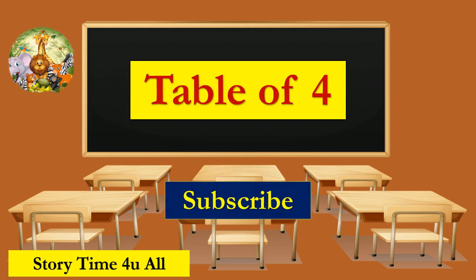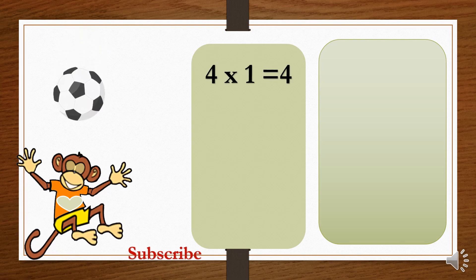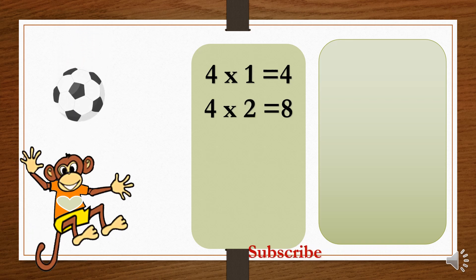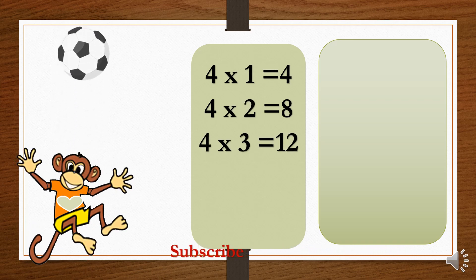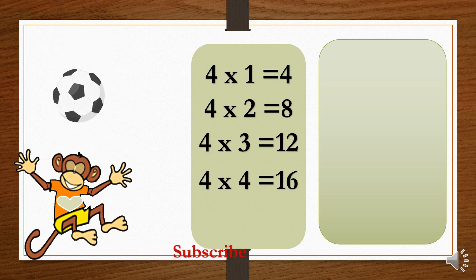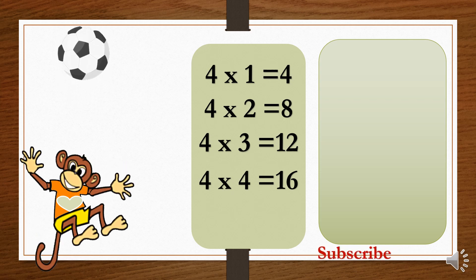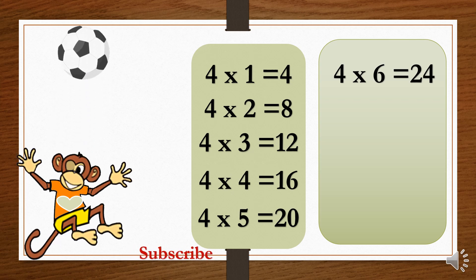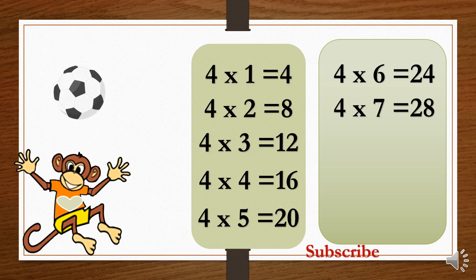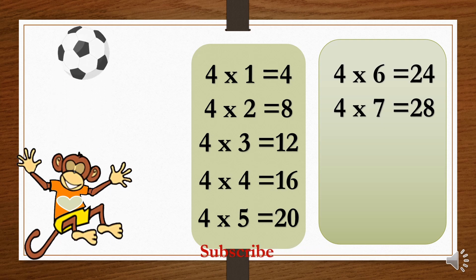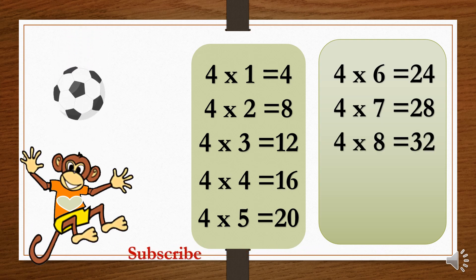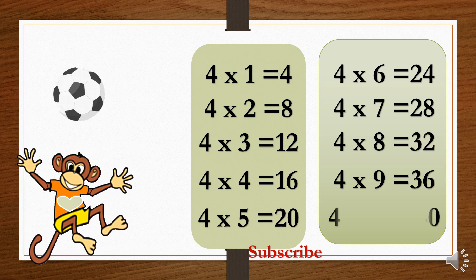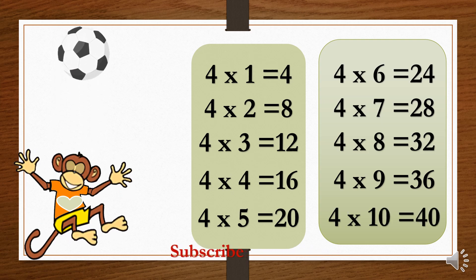Congratulations! Table of 4. 4×1=4. 4×2=8. 4×3=12. 4×4=16. 4×5=20. 4×6=24. 4×7=28. 4×8=32. 4×9=36. 4×10=40.